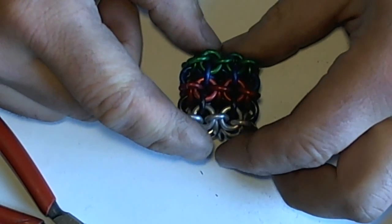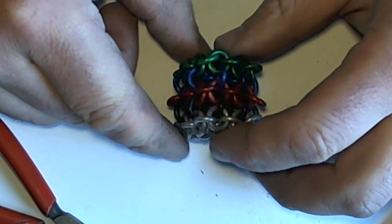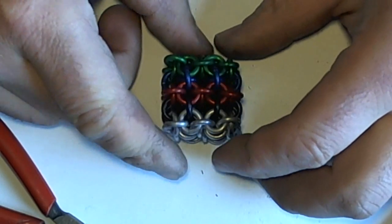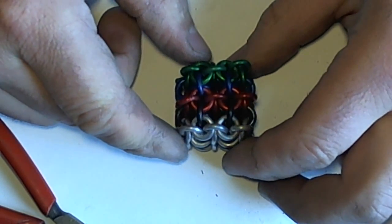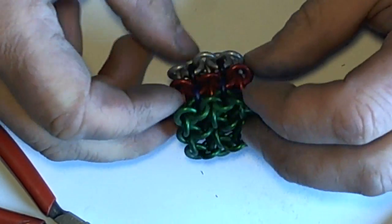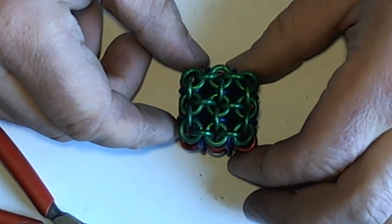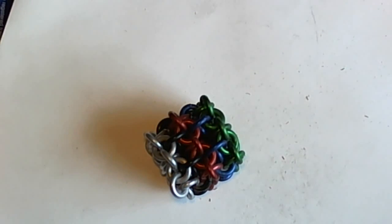So if you think of this as a dice, you have four sides going around this way that are identical. And you have your ends - your one and your six, for example - that are a different weave. Perfect. Good, thanks for watching.